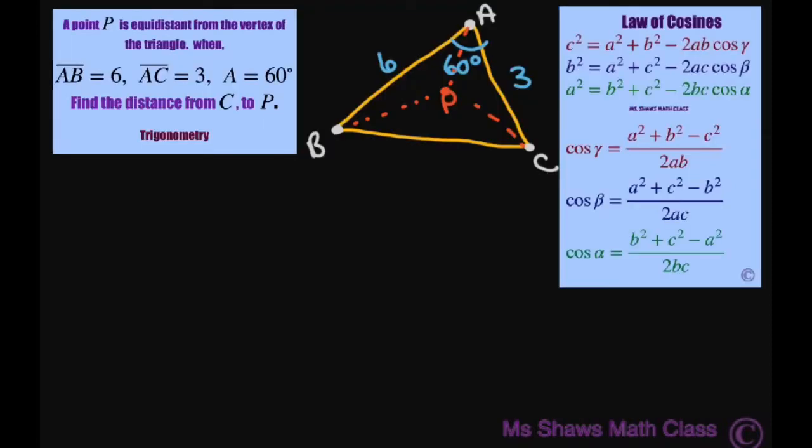So basically we're trying to find this distance here from C to P. I have everything labeled. So the first thing we're going to notice is by the law of cosines we can do the length of BC here since we have this angle.